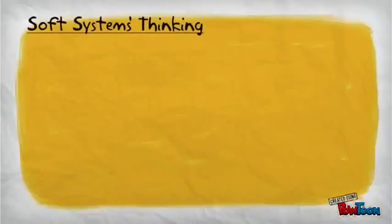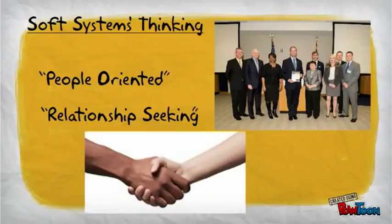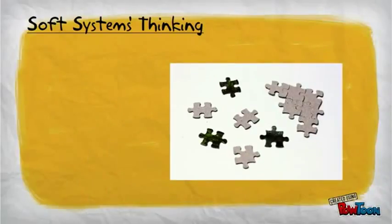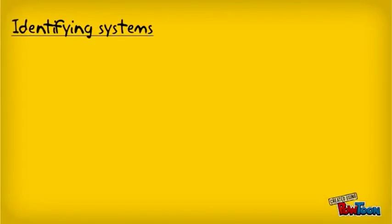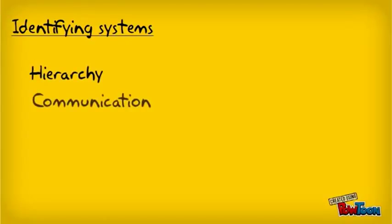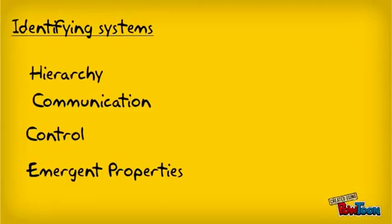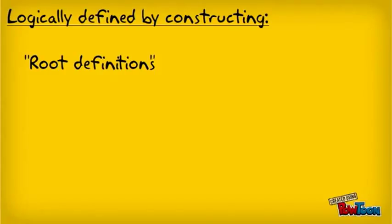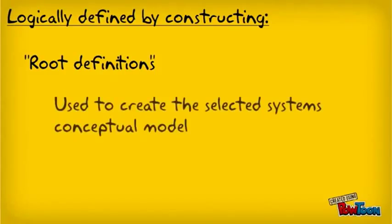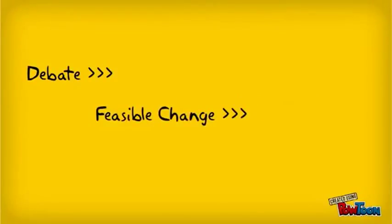Soft Systems Thinking is people-oriented and relationship-seeking. This understanding is represented by using rich pictures. When identifying systems which will provide useful insights, the concepts of hierarchy, communication, control, and emergent properties are used. These systems are logically defined by constructing root definitions, which are then used to create the selected systems' conceptual models. The models represent different viewpoints which form a base for debate, leading to feasible change and then to action.